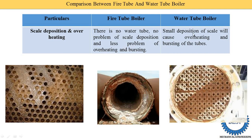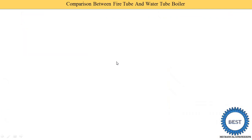In a water tube boiler, water is flowing inside the tubes which creates the problem of scaling, and due to the scaling overheating is done. This scaling is inside the tube, so it is also difficult to clean. In a fire tube boiler, scaling is done outside, so it is easily cleanable. This is the main point in favour of the fire tube boiler compared to the water tube boiler.